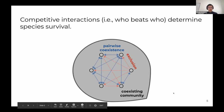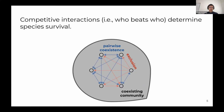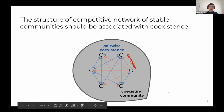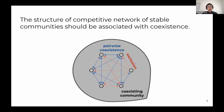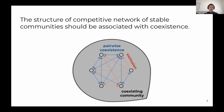If we can assemble a microbial community with a manageable number of species that we can manipulate and measure in the lab, and if species survival is mostly determined by competitive interactions, then in principle the network of pairwise competition should tell us something about coexistence. I'm arguing that among many possible network topologies in a species pool, those that fail to persist will be purged by community assembly, while networks that can persist will be present in the final coexisting community.